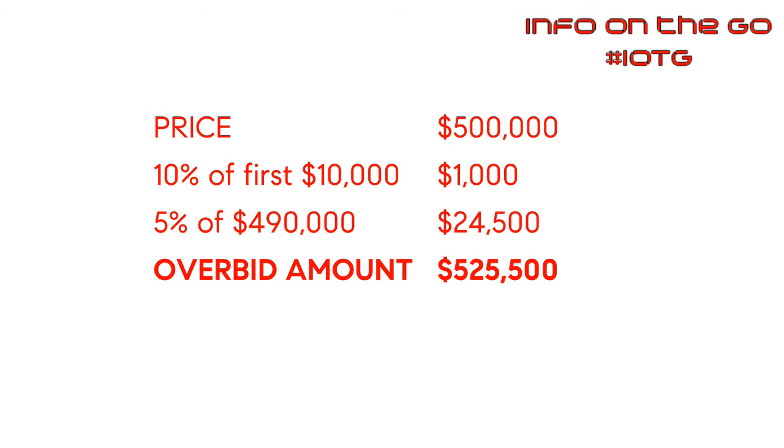The judge takes a look and says, 'Okay, this is great — I'm going to set a court confirmation date to get this transaction moving.' On that date, the person or persons who wrote the offer will show up in court, but so will anybody else who's interested in the property. There will be a bidding process, almost like an auction. The $500,000 is the baseline. Every next bid has to meet what's called the overbid amount: take the purchase price, take the first $10,000 and calculate 10% of that, then take 5% of the remaining balance, and add those numbers together.